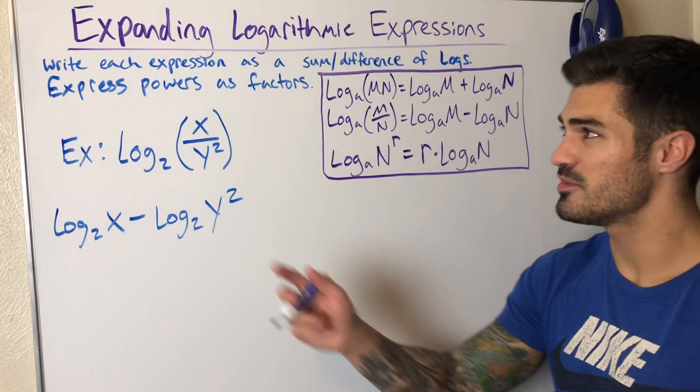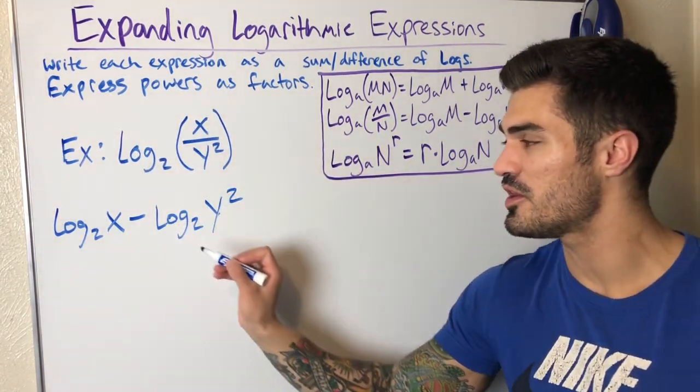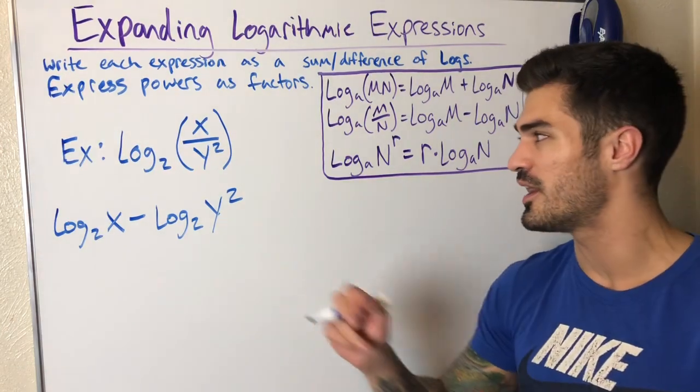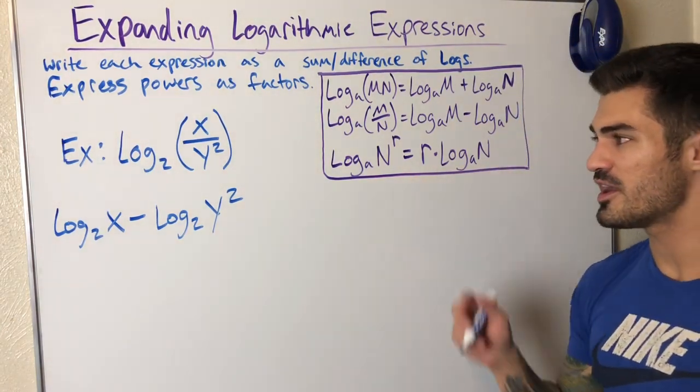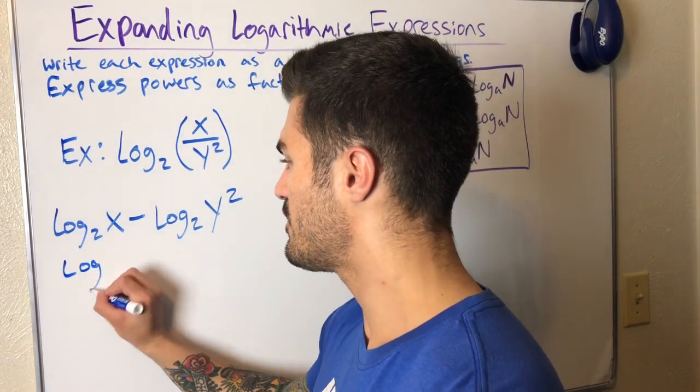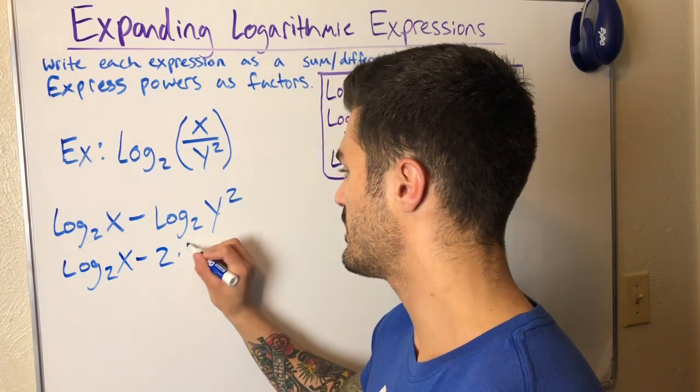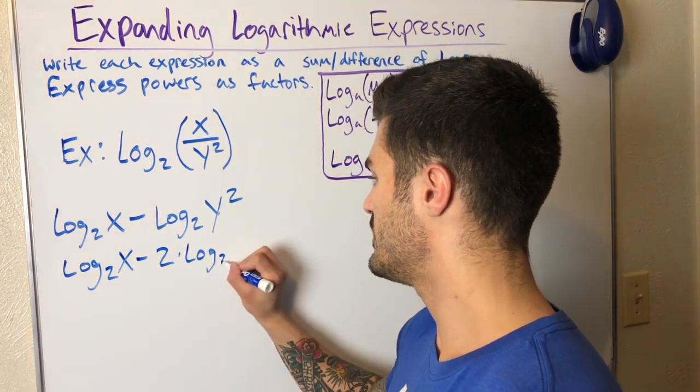And now I just have one last step because again it says express powers as factors, so this two can come up in front being multiplied to the log base two of y. So I'm gonna bring that two out in front and that's actually gonna be my final expanded expression: log base two of x minus two times log base two of y.